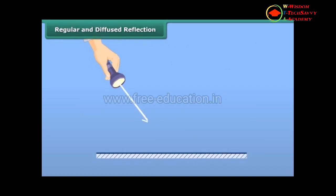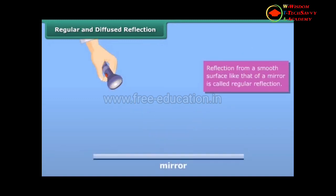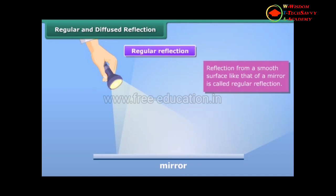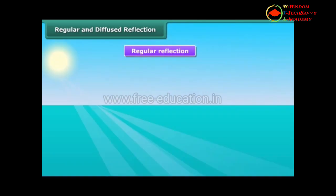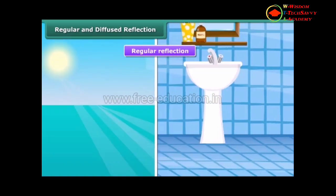We now know that light falling on an object is reflected. Reflection from a smooth surface, like that of a mirror, is called regular reflection. Reflection of light from the water surface and highly polished floors are also examples of regular reflection. Images are formed by the regular reflection of light.